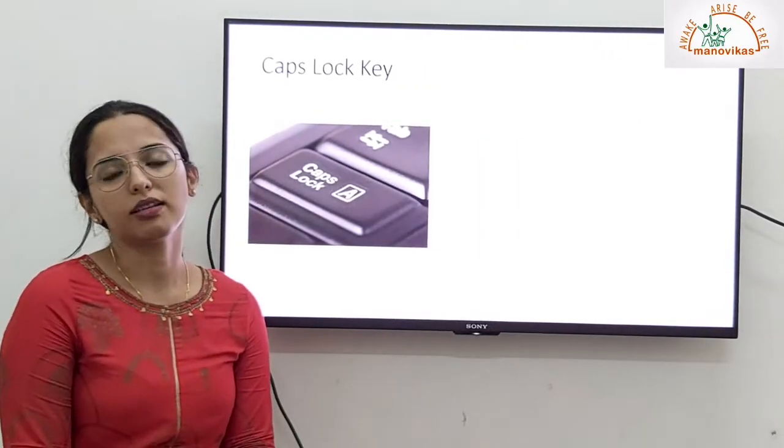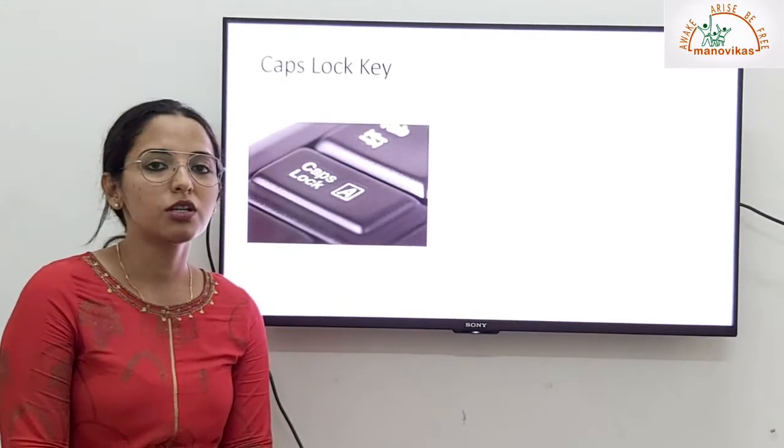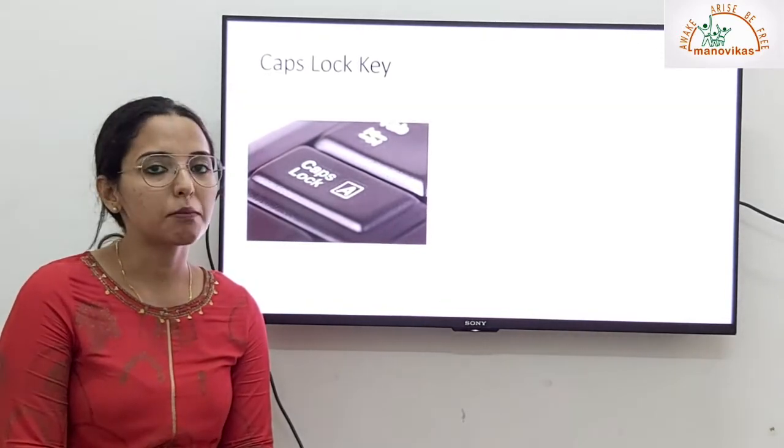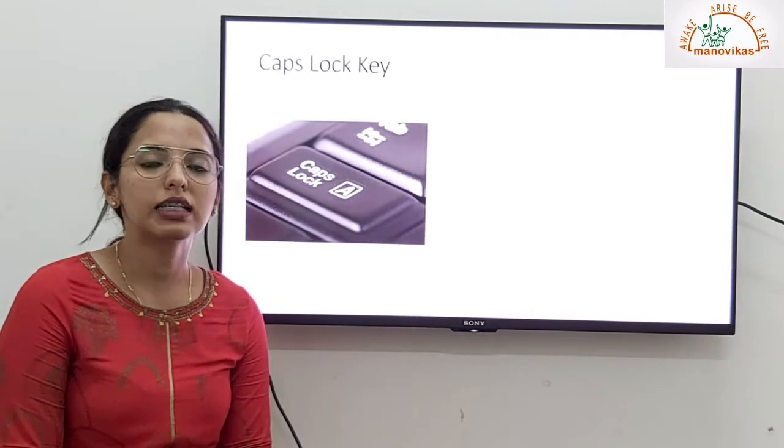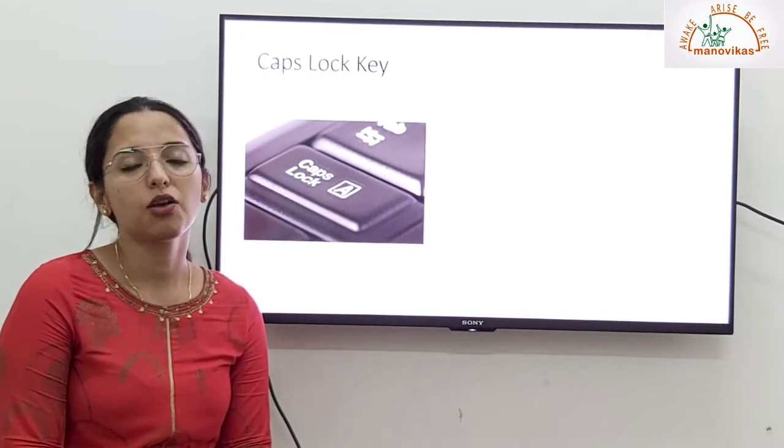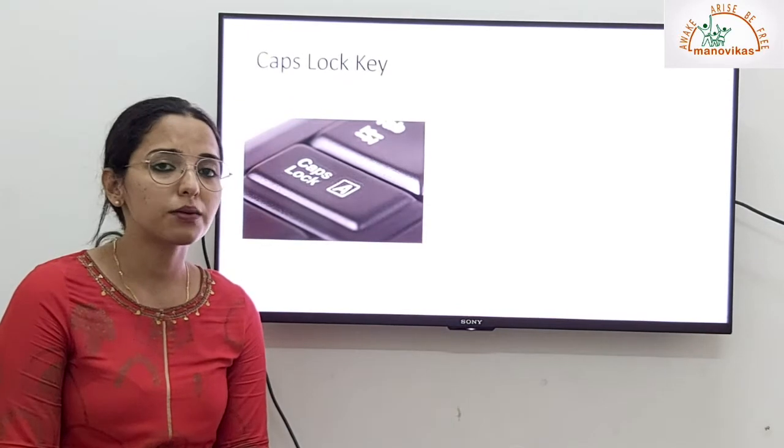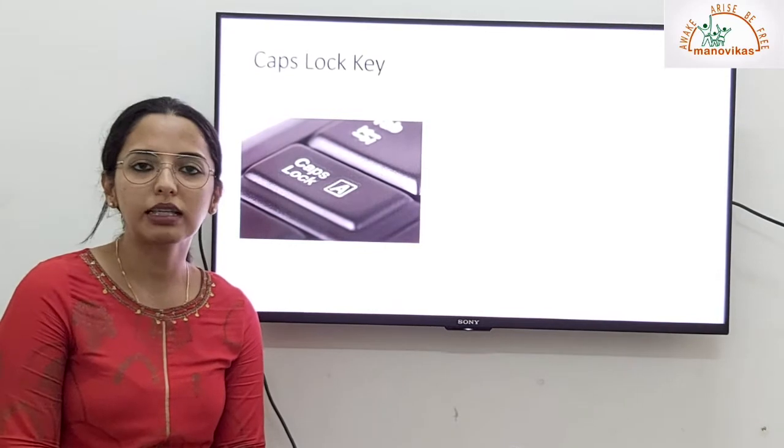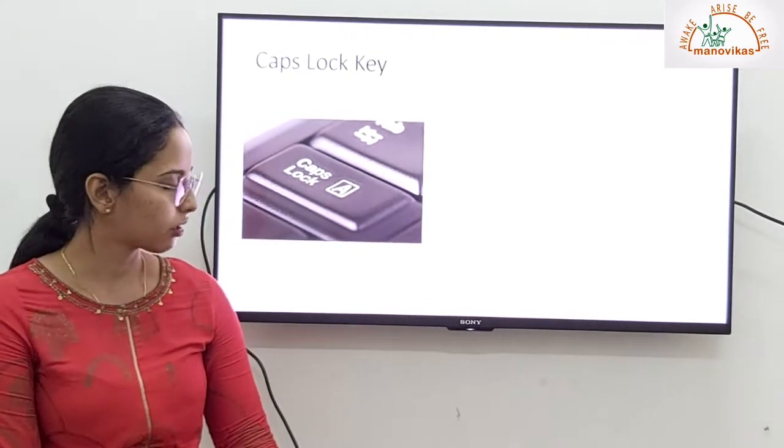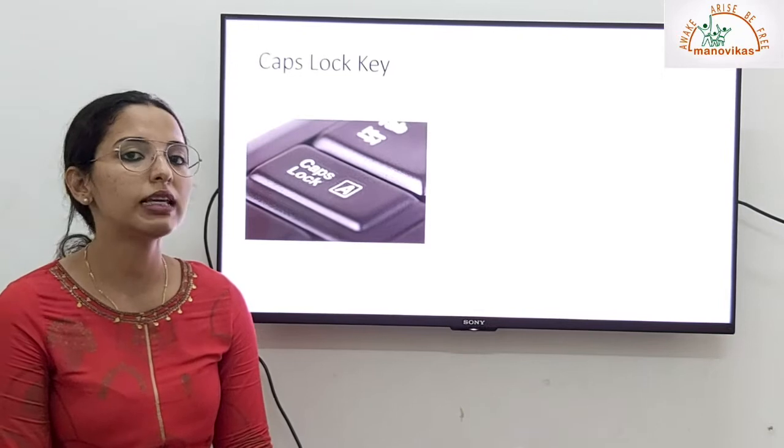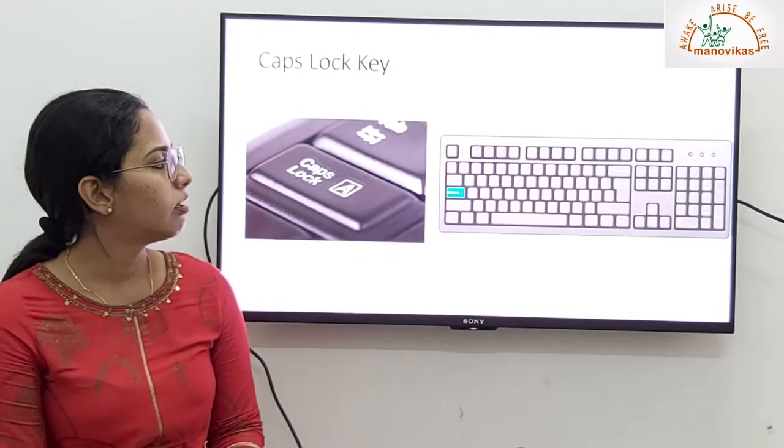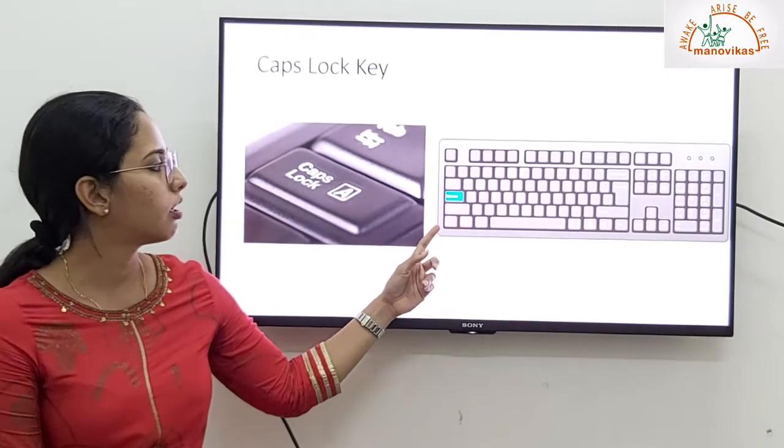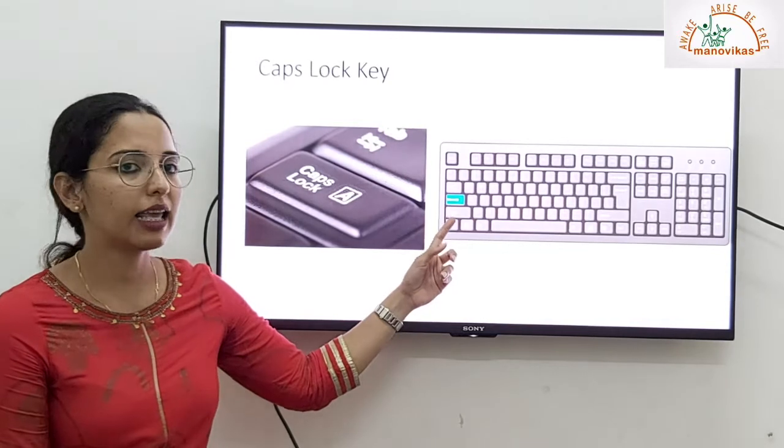Caps lock key. A caps lock key is used to make your letters capital. With the help of caps lock key, we are able to write capital letters. When you press this key, the light of the keyboard will glow and that's how you know that the caps lock key is on. Let us see where it is located on the keyboard. A caps lock key is located towards the left of the keyboard, just next to the letter A key.